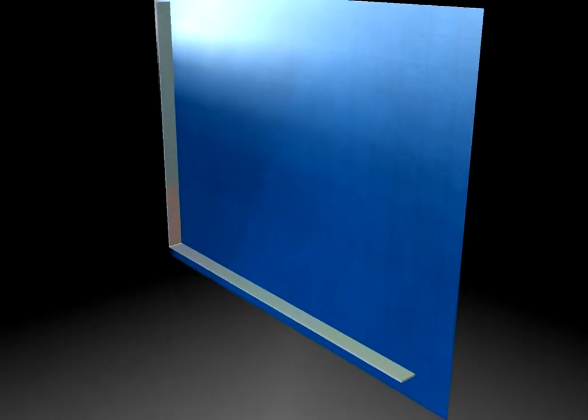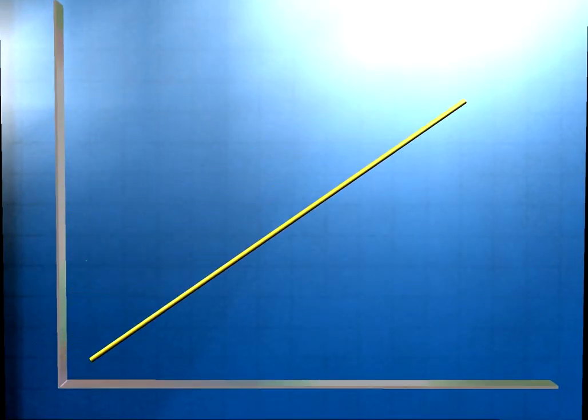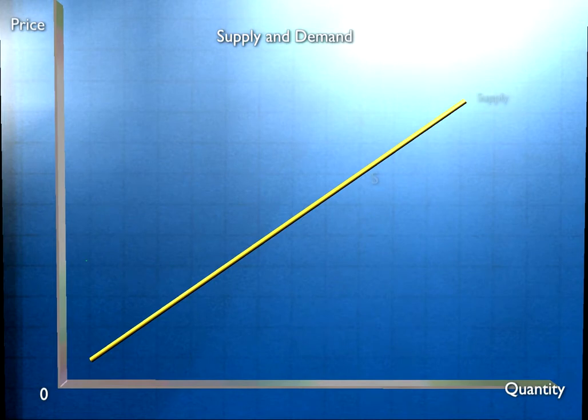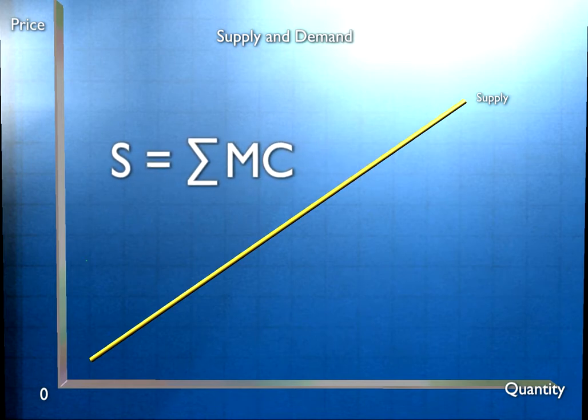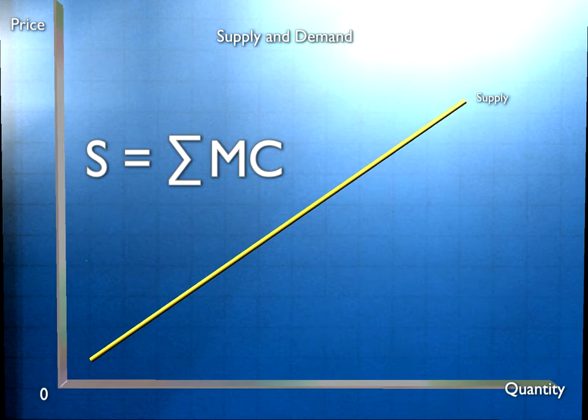The supply curve, remember, is the sum of the marginal cost curves of the firms in the perfectly competitive industry. So marginal cost reflects the cost to the firm of producing any given unit of output. But it's also the cost to society of producing that unit of output, because the cost to the firm equals the cost of the resources used, and the resources have an opportunity cost.